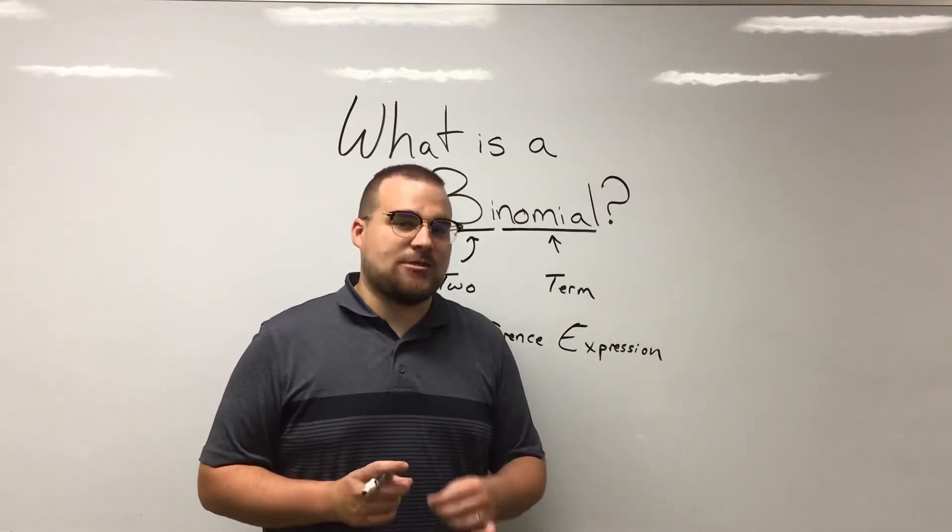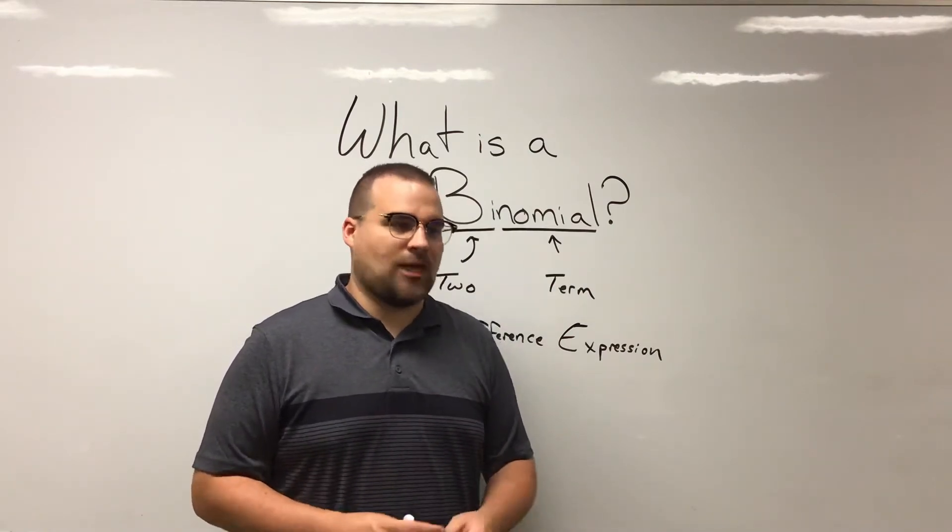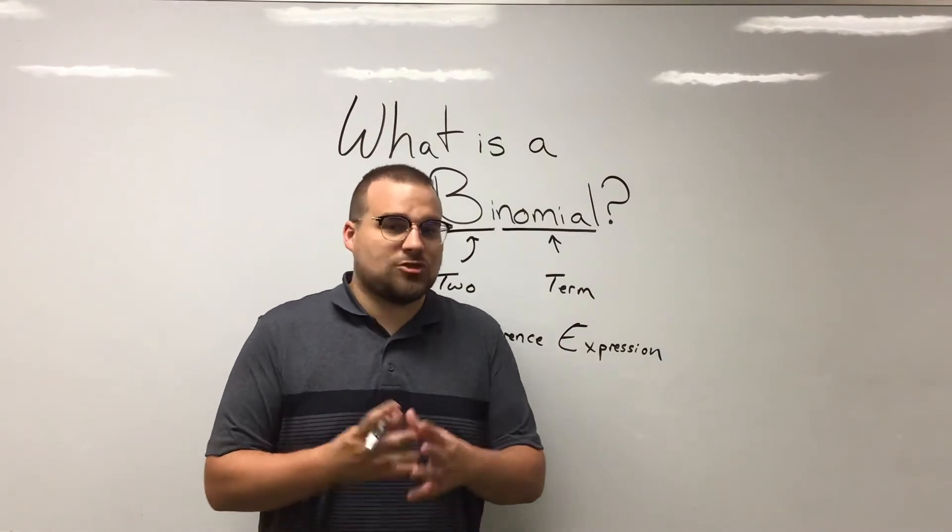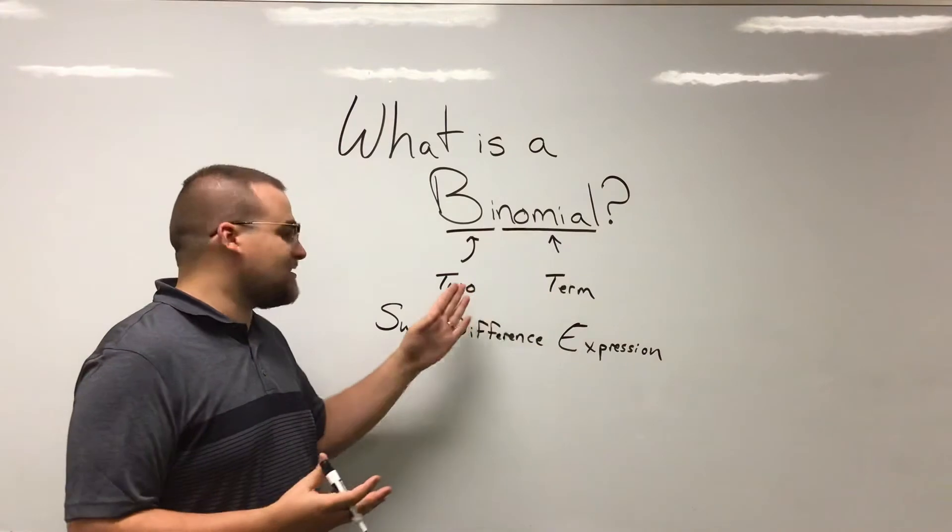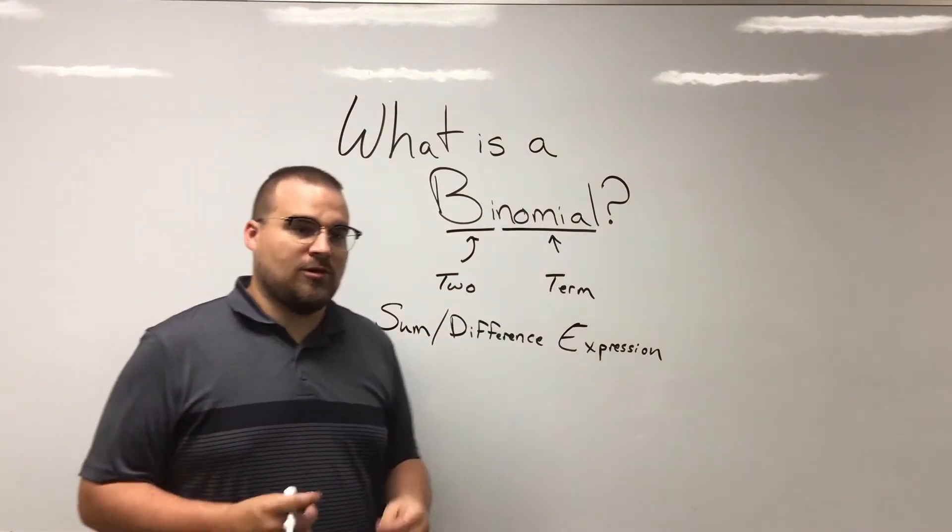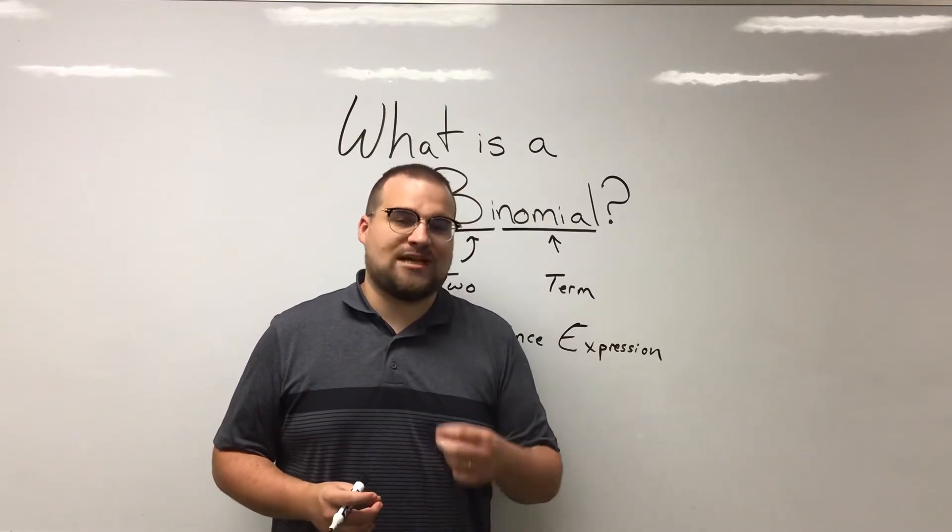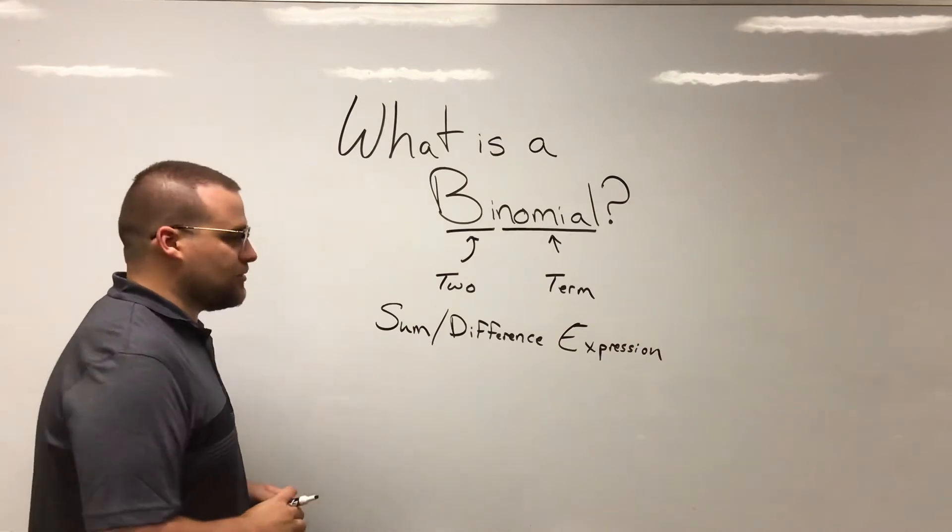They cannot be terms that can combine. Because if they are two like terms, for example, 3x and 5x, then they can combine to just make 8x. And that is not a binomial in that case. It's not two terms, it's really just one. So a binomial is made up of two terms that are not alike. That is an important little caveat to the situation.